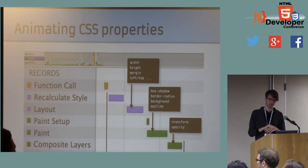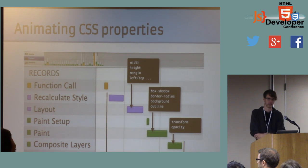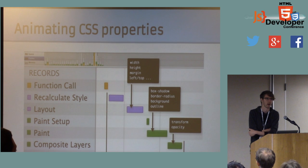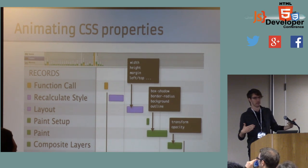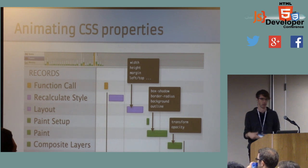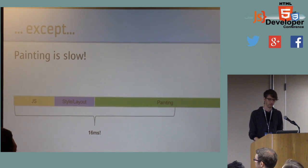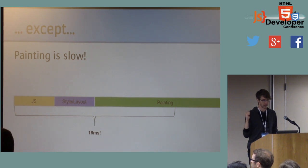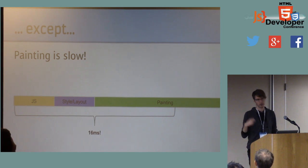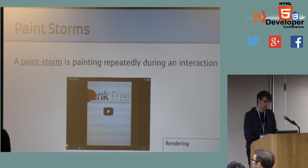Changing something like width will cause a re-layout of the content inside that block — that's unideal. I think we all want to get to a world where you can just animate whatever property you want and expect it to render reasonably fast. Unfortunately, that is not the world we're in today. In particular, painting is really, really slow still. As a result, anything that requires repainting is very difficult to animate at 60 Hz across a breadth of devices.